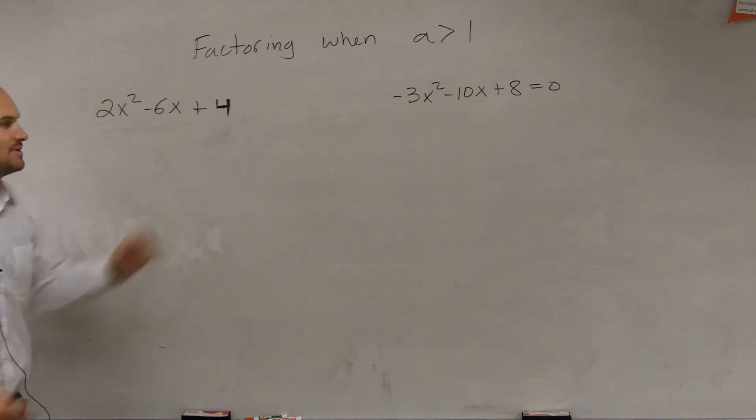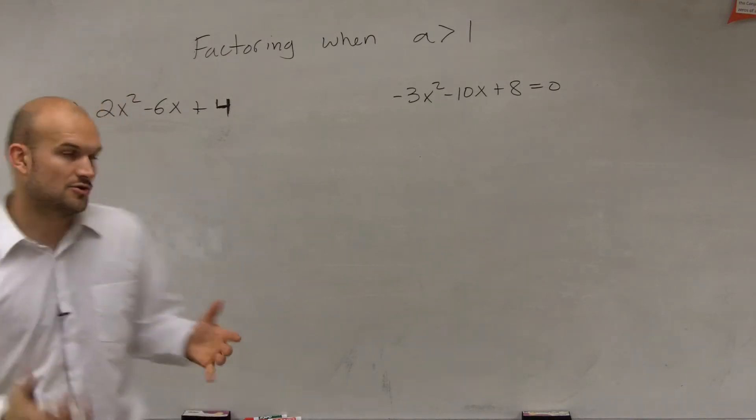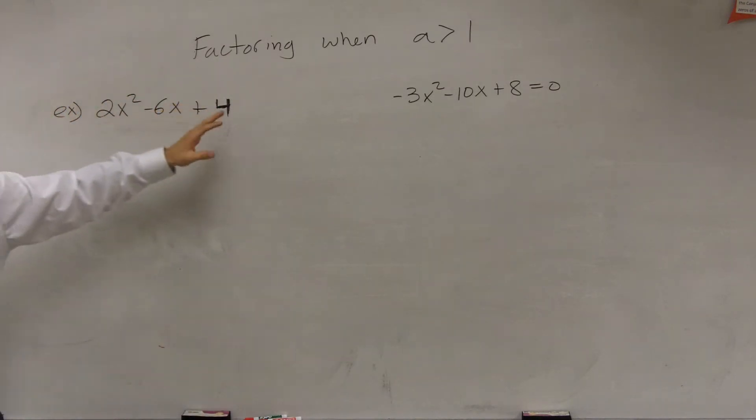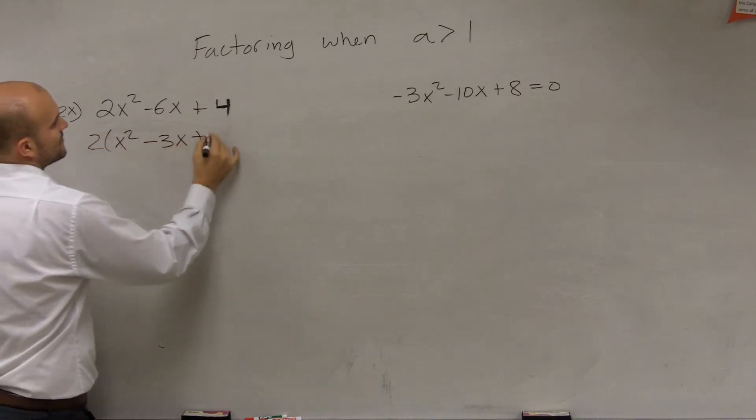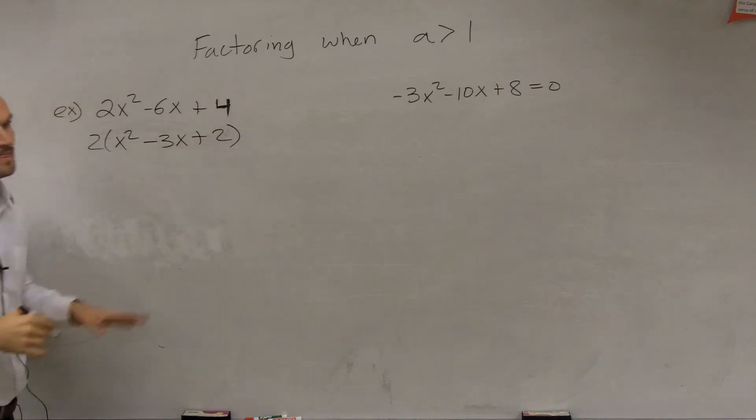So I'm going to just do this problem first to explain factoring again. Remember, we always looked to take the greatest common factor out first. So here I can factor out a 2, leaving me with 2 times (x² - 3x + 2).